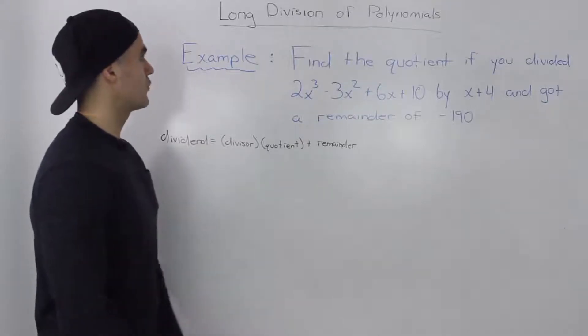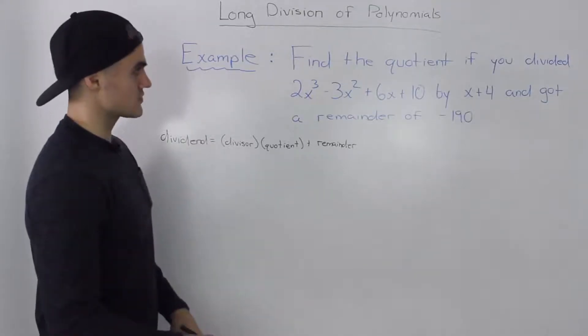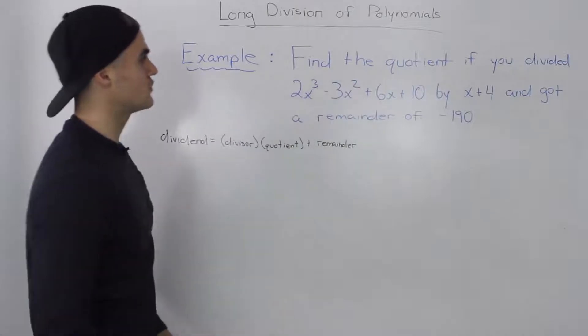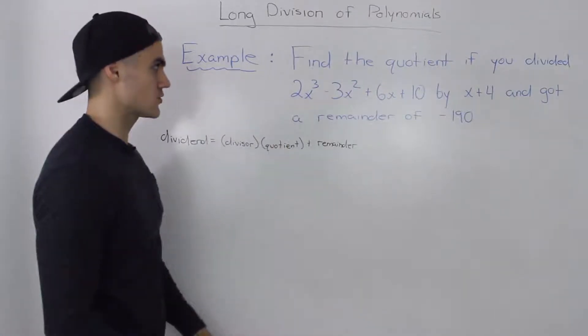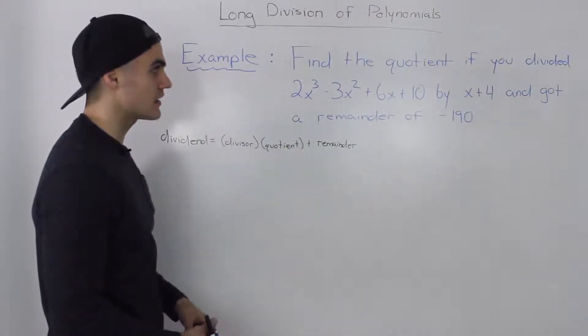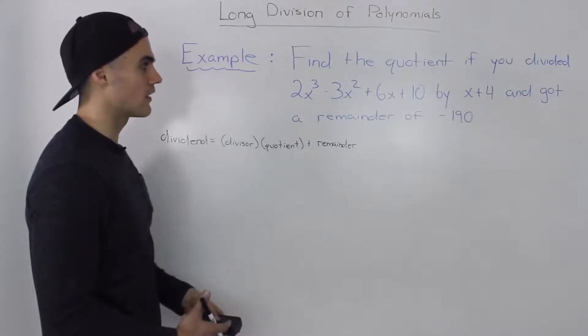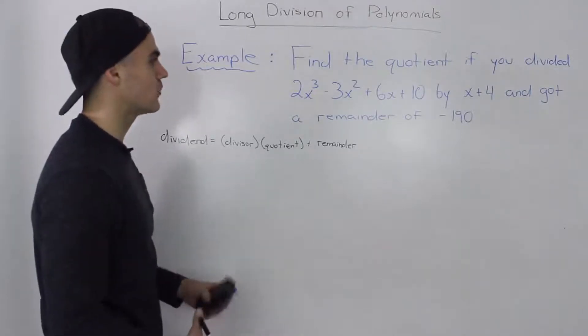Moving on to the next example for the long division of polynomials, find the quotient if you divided 2x³ - 3x² + 6x + 10 by x + 4 and got a remainder of -190.